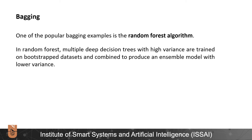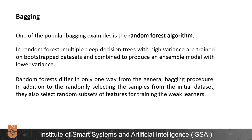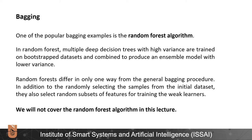In random forest, multiple deep decision trees with high variance are trained on bootstrapped datasets and combined to produce a single model with lower variance. Random forests differ in only one way from the general bagging technique: in addition to randomly selecting samples from the initial dataset, they also select random subsets of features for training the weak learners. We will not cover the random forest algorithm in this lecture.